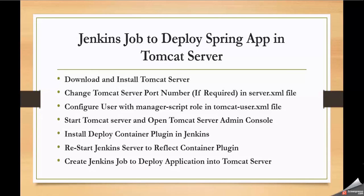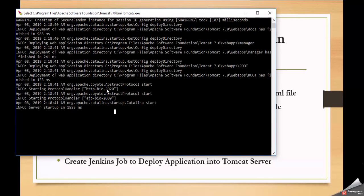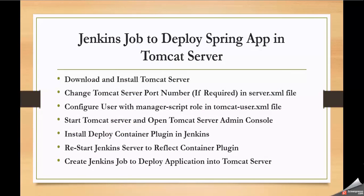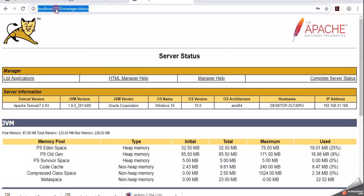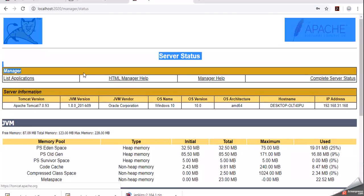Welcome back. In the previous video we started creating a Jenkins job to deploy a Spring application to a Tomcat server. We downloaded and installed the Tomcat server, which is running on port 2020, and configured an admin user with a role called manager-script. Here we can see that the Tomcat server is running on port 2020, and opening the admin console at port 2020 shows the Tomcat admin console.